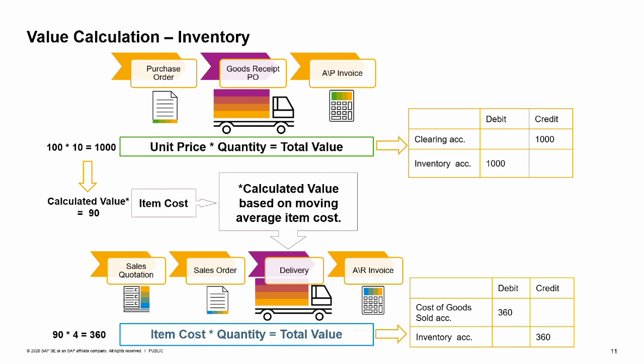Assuming the company runs perpetual inventory, an item cost value is being calculated automatically in each stock transaction. More details on perpetual inventory are provided in a separate course. When Joe entered the goods receipt PO to SAP Business One, the purchasing price list value of 100 per unit affected the unit price in the goods receipt PO and also the item cost value. The item cost value is calculated automatically behind the scenes according to the valuation method chosen for the item: moving average, FIFO, or standard. This particular item was set up as moving average, so based on the total number of items in stock and the purchase prices previously paid, the calculated item cost value after the goods receipt PO was 90. Joe entered a quantity of 10 portable media players. Therefore, the total value of the journal entry created by the goods receipt PO was 1,000, and these are the credit and debit amounts registered to the inventory default accounts. However, the value of the journal entry linked to the delivery sent to the customer is 360 — that is, the quantity of four items multiplied by the item cost value at that moment, 90.